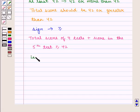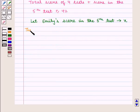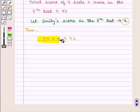So let Emily's score in the 5th test be x. Then we have the total score of 4 tests, that is 34, plus score in the 5th test which is given by x, is greater than or equal to 32. This is the required inequality.